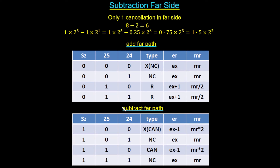Let's look at the truth table to help build the circuit. As a reminder, for addition in the far path: when bit 25 was low we got no change; when bit 25 was high, we added 1 to the exponent and divided the mantissa by 2. Now we're interested in the subtraction truth table for the far path with SZ equal to 1.